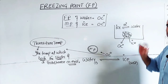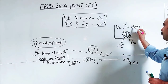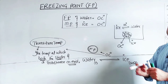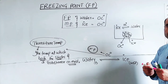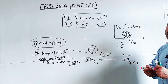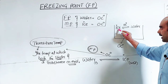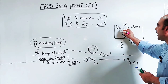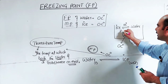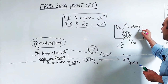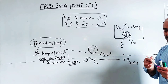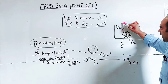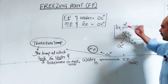At zero degrees C, two states are in the same place at the same time. The solid state and the liquid state coexist at that temperature, meaning both physical states of the substance exist simultaneously.